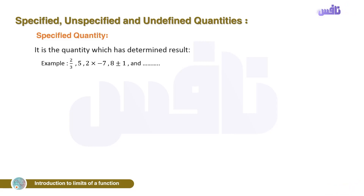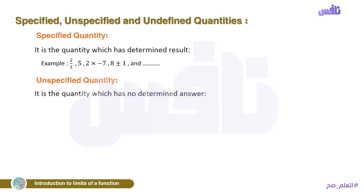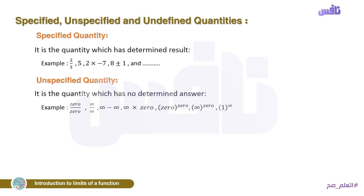Now we will know the definition and find the difference between specified and unspecified quantities. An unspecified quantity is a quantity which has no determined answer. What is it? It means: zero over zero, infinity over infinity, infinity minus infinity, or infinity times zero.